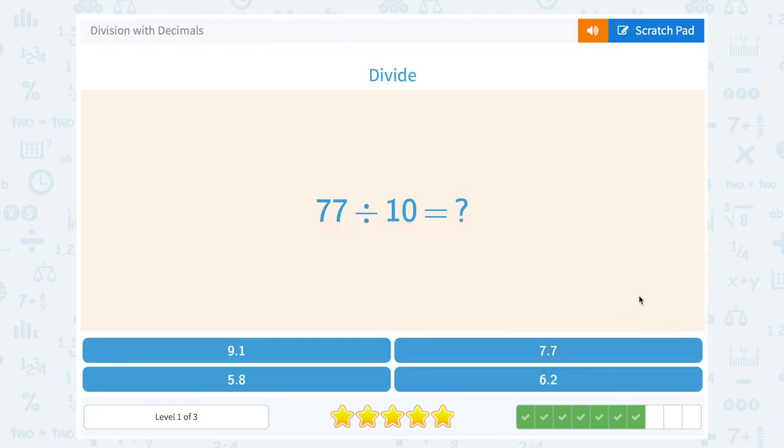77 divided by 10. We know our pattern is to move that decimal point one place, or make it one place value smaller. So that would have to be 7.7.